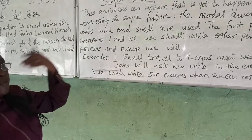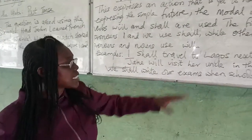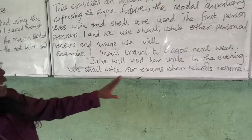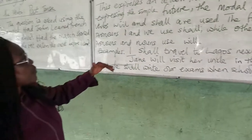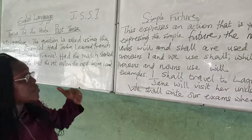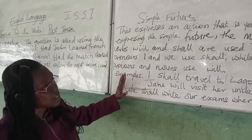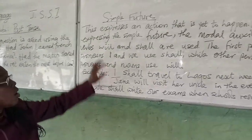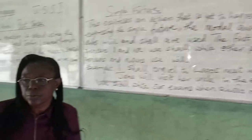Examples: 'I shall travel to Lagos next week' — an action I will perform in the future. 'Jerry will visit her uncle in the evening.' 'We shall write our exams when schools resume.' There are other ways of expressing the future, such as future intention, which will be our lesson for another class. I will explain more on the use of 'will' and 'shall.' Thank you.